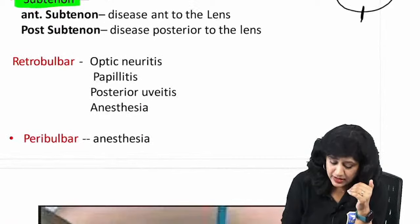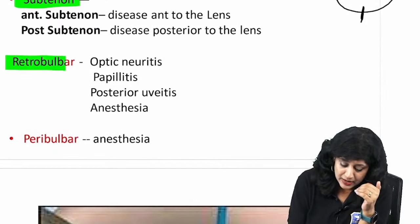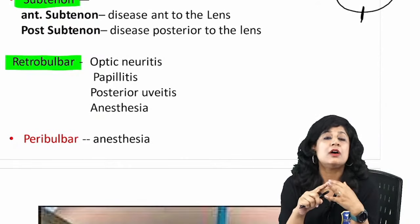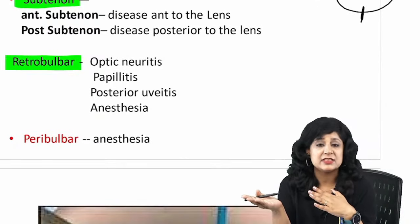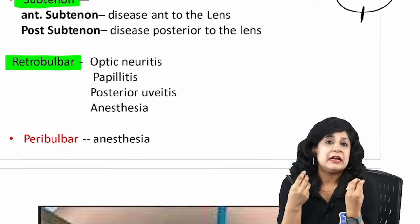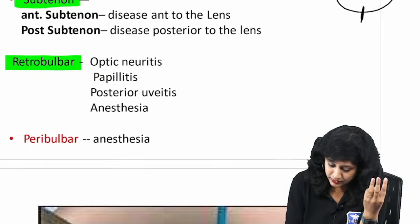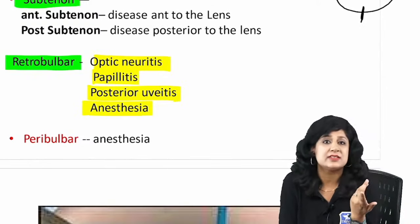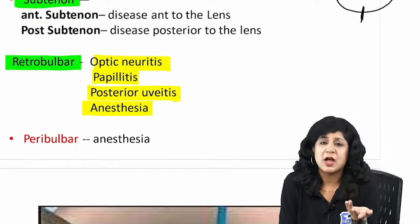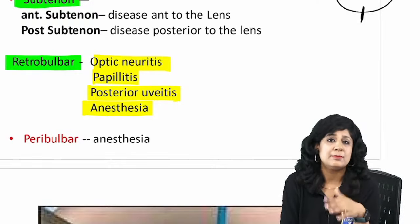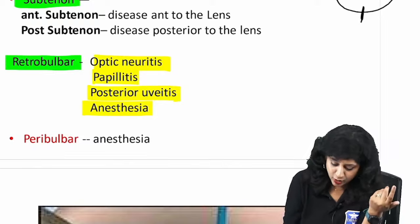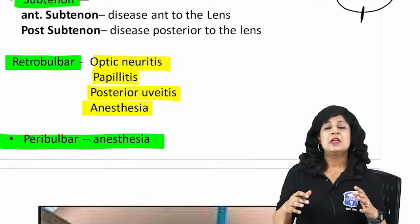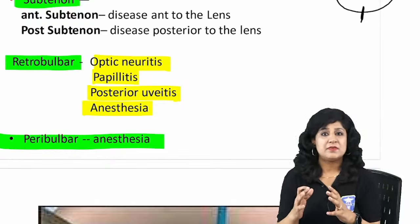Retrobulbar injections are used for retrobulbar anesthesia as well as for conditions like optic neuritis (retrobulbar optic neuritis), papillitis, and posterior uveitis. Retrobulbar blocks are now considered somewhat obsolete, with peribulbar anesthesia being the current preferred approach. The applications for each injection type are fairly clear based on the anatomy and the condition being treated.